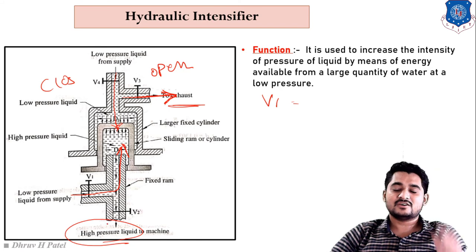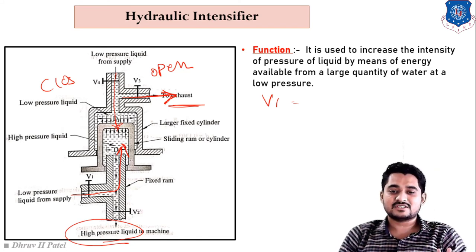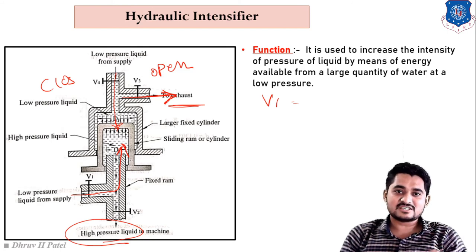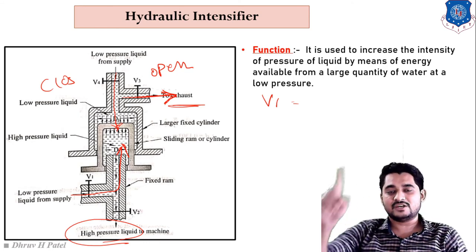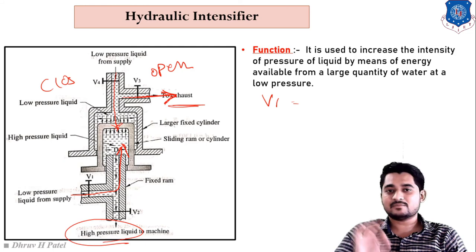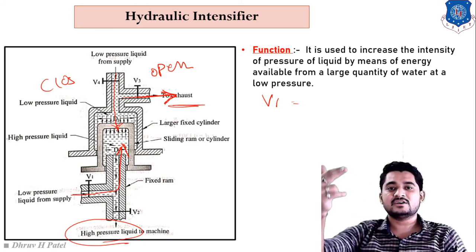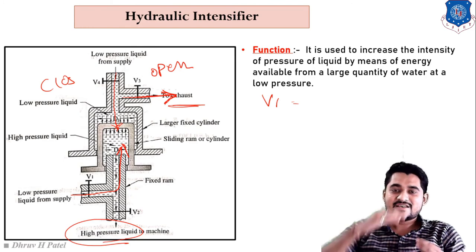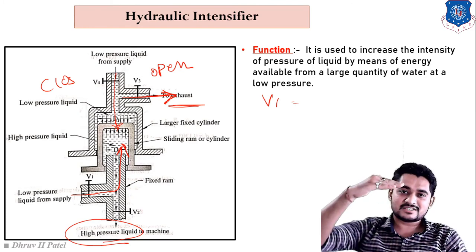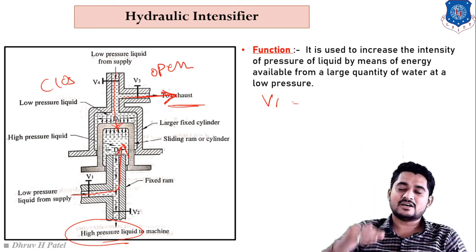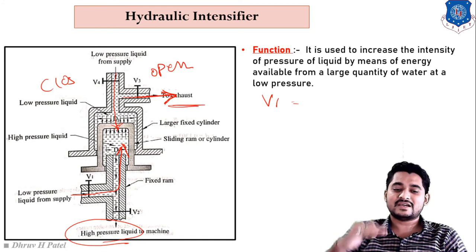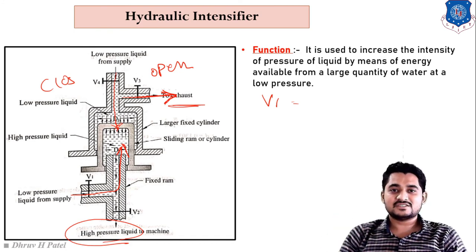When V4 is opened, the sliding ram moves downward again, generating higher-pressure liquid that can be used in any type of machine. Remember: V1 and V4 are both inlet valves supplying lower-pressure liquid. We open V1 and V4 alternately — when V1 is open the sliding ram moves up, and when V4 is open the sliding ram moves down, generating higher-pressure liquid.